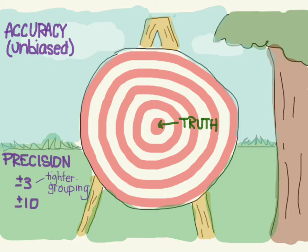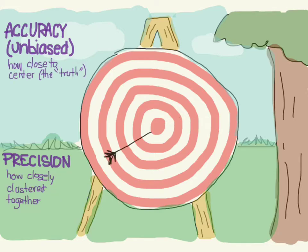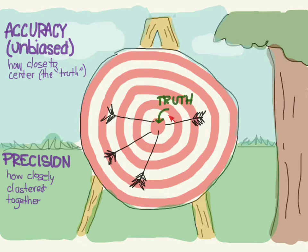So let's shoot a couple of arrows at this thing. These arrows are all clustered here around the center, near the truth. We could call this accurate, and we could also call it precise because look at how closely together they are grouped. So this particular shooter is accurate and precise.